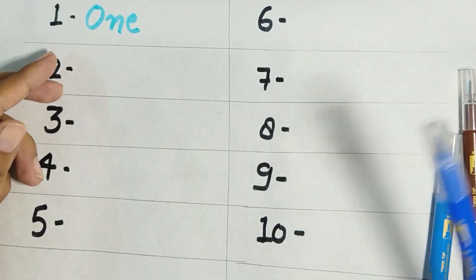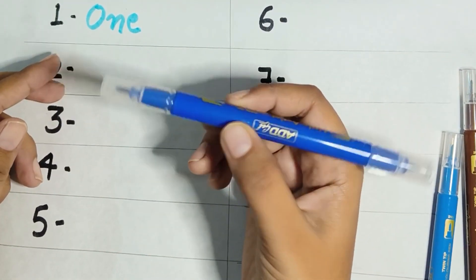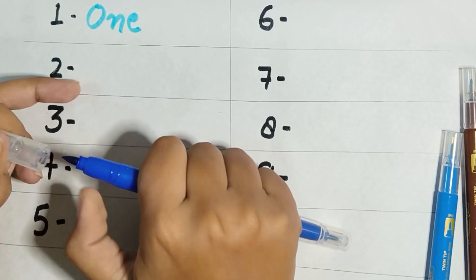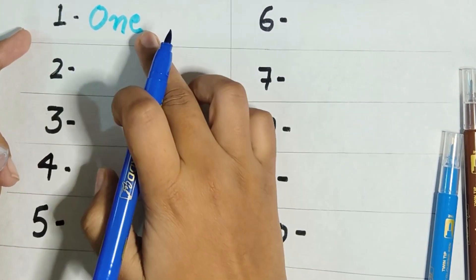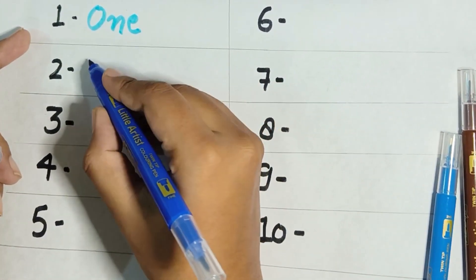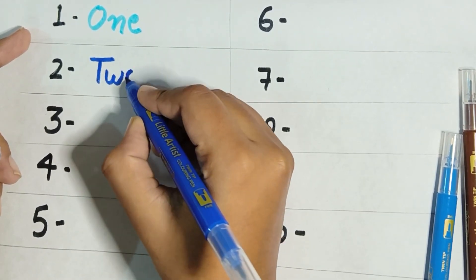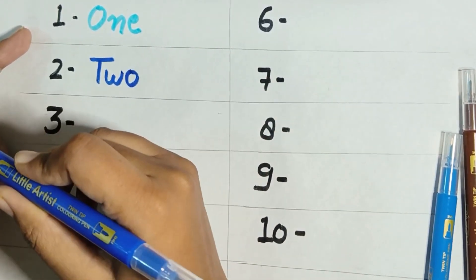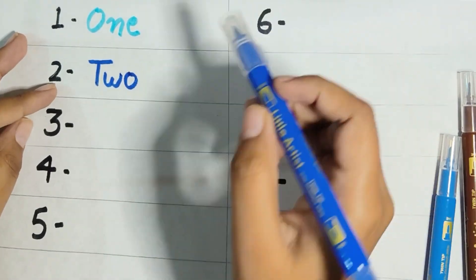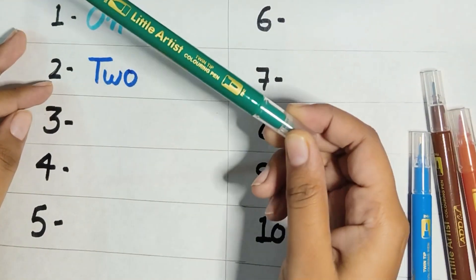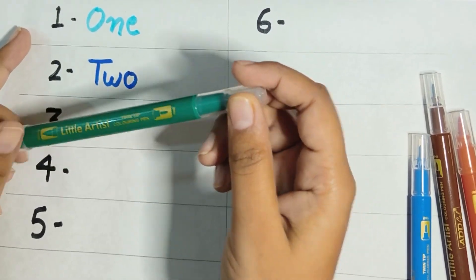Dark blue color. T-W-O, two. This is dark green color.